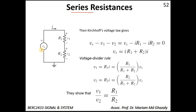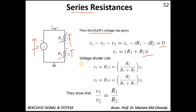Let's look at the series resistance example. You have input voltage Vs, current I, and resistances R1 and R2 in series, with voltages V1 and V2 across them. Applying KVL: Vs minus V1 minus V2 equals zero. Substituting V1=IR1 and V2=IR2, we get Vs equals R1 plus R2 times I.